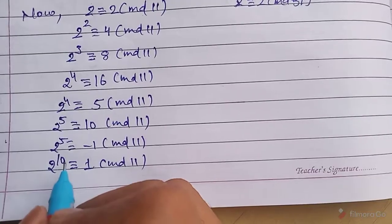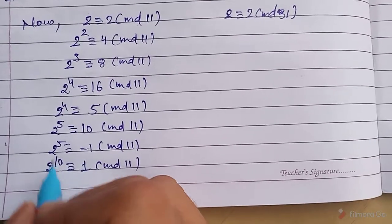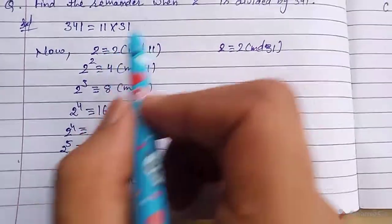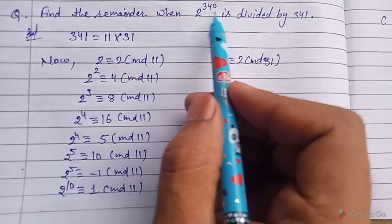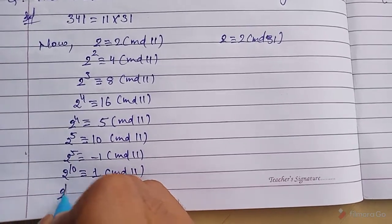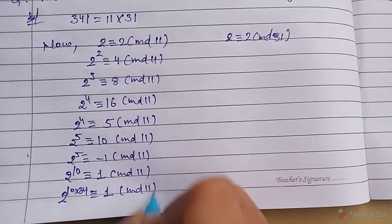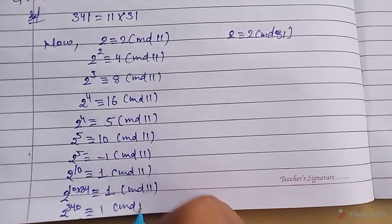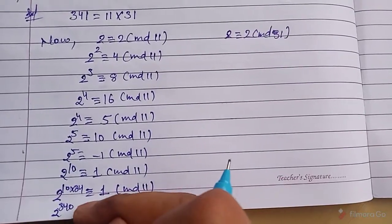When the remainder becomes 1, we divide the required power by that power. Since 340 is exactly divisible by 10 — as 340 = 10 × 34 — we can write (2^10)^34 ≡ 1^34 ≡ 1 (mod 11). So 2^340 ≡ 1 (mod 11). This is equation one.